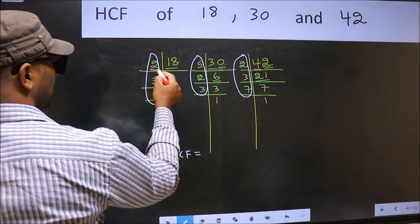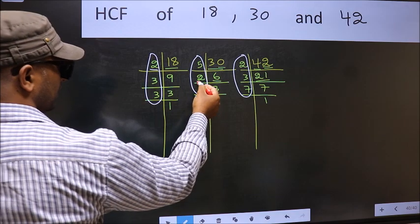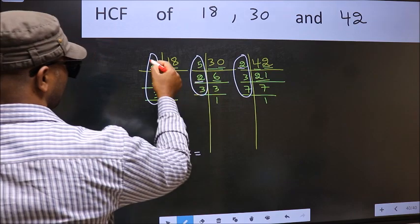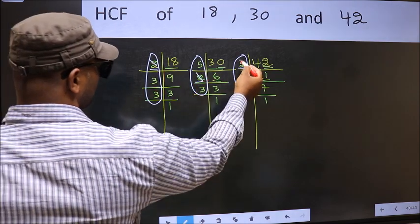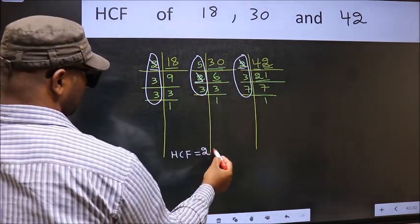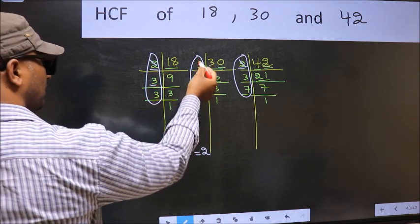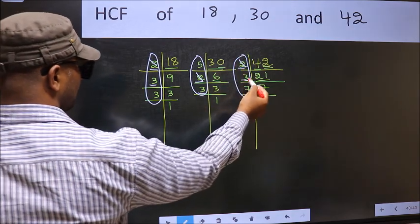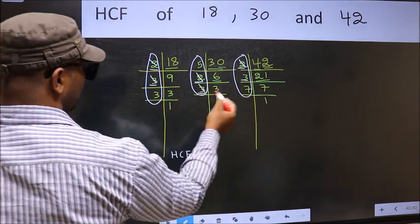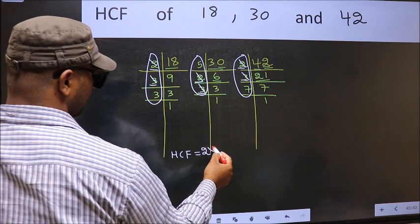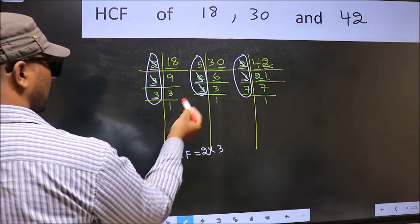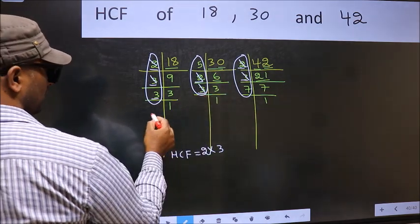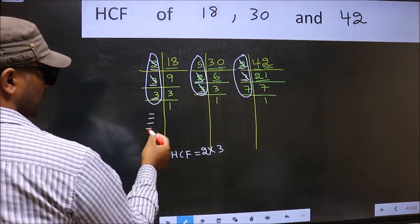Starting with the number 2. Do we have 2 here? Yes. Go to the next place. Do we have 2 here? Yes. So we include 2. Next number 3. Do we have 3 here? Yes. Go to the next place. Do we have 3 here? Yes. So we include 3. Next number 3 — do we have 3 here? No. No need to check the other place.